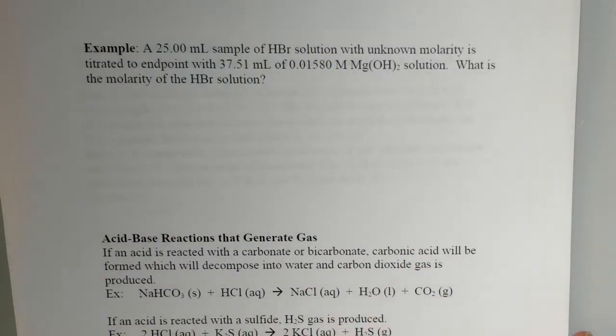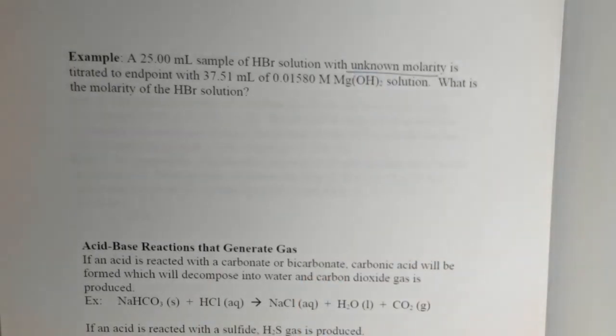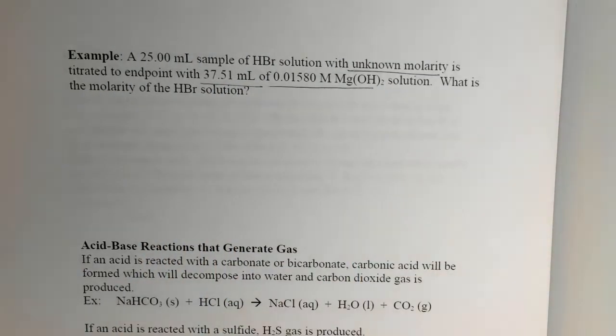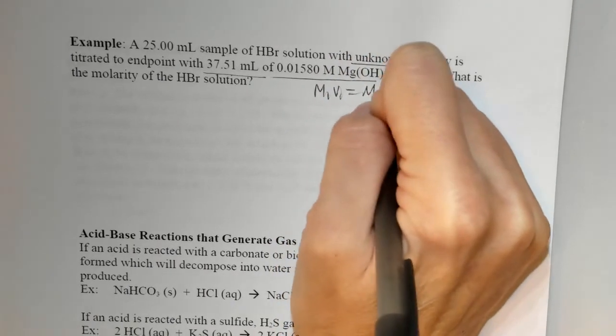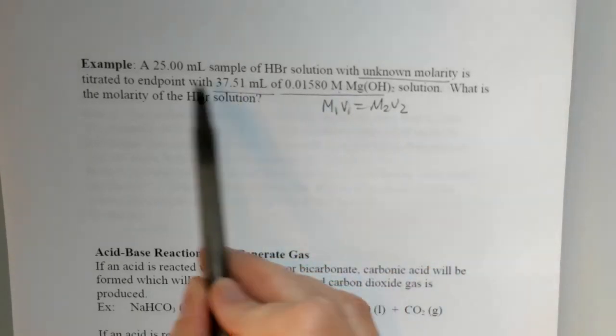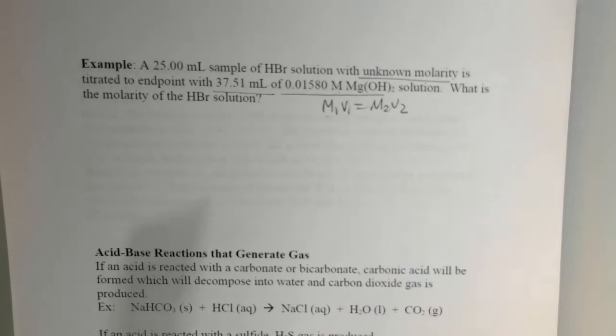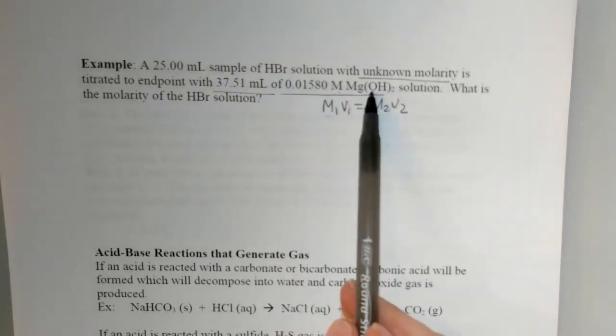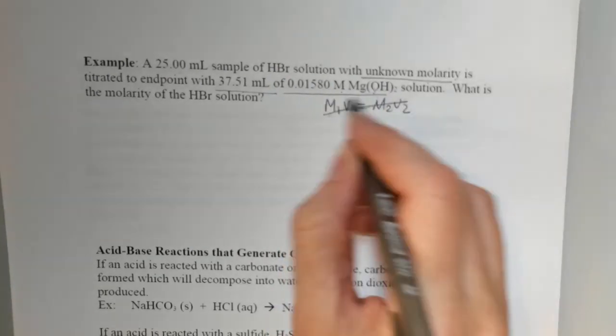It says we have a 25 milliliter sample of hydrobromic acid solution with an unknown molarity and it's titrated with 37.51 milliliters of a 0.0158 molar magnesium hydroxide solution. What would be the molarity of the HBr? Now a lot of times students want to use the M1V1 equals M2V2 formula here because it looks like it should work. I've got a molarity and a volume, a volume and I want a molarity. But remember when we talked about this, this was only for dilution and this isn't dilution. We have a chemical reaction taking place here. So we can't use that formula here.